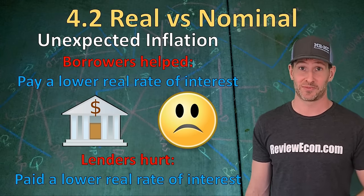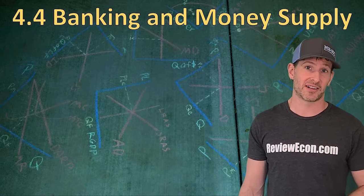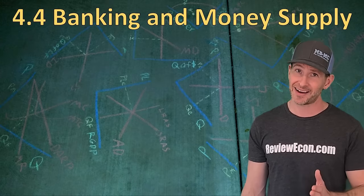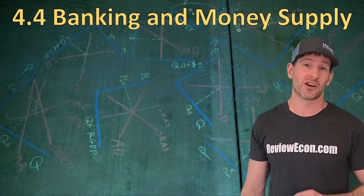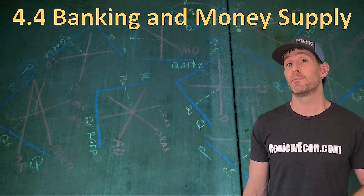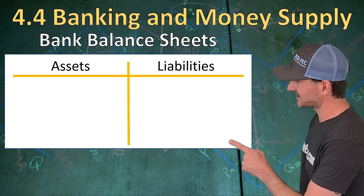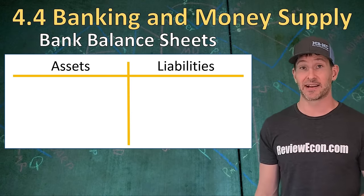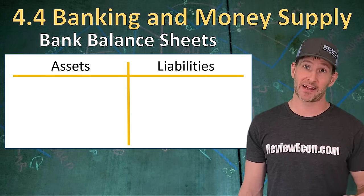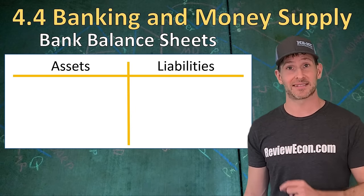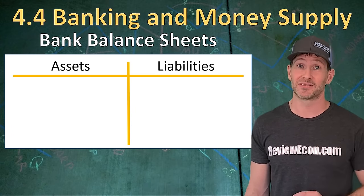The next thing we're going to look at is what is often considered one of the most difficult concepts in AP economics — bank balance sheets. I don't think it's that bad if you take it one step at a time. On our bank balance sheet, we have an asset side and a liability side. On the asset side are the things of value that the bank owns. On the liability side are the things of value that the bank owes to somebody else.